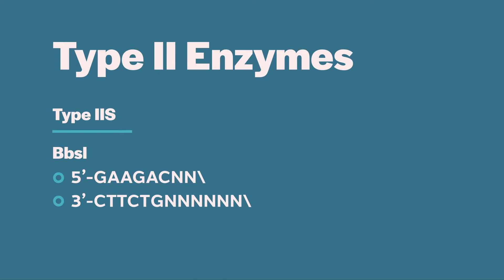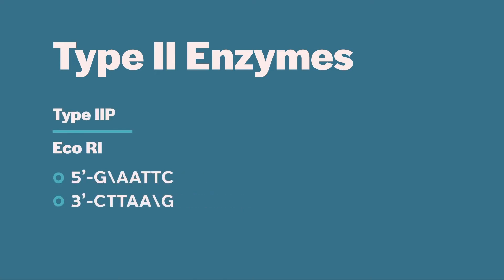Type IIS enzymes have a special use in cloning that we will discuss in a separate video. The characteristics that make non-ambiguous type IIP restriction enzymes useful in cloning are that they have specific recognition sites, generally ranging from four to eight bases in length. In addition, cleavage occurs at a specific location within the recognition site, resulting in predictable sequences at the point of DNA cleavage.